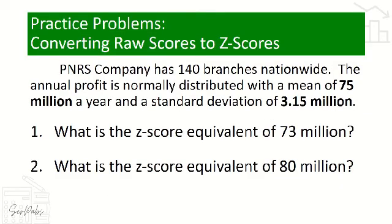For our practice problems, this will be your turn. PNRS company has 140 branches nationwide. The annual profit is normally distributed with a mean of 75 million a year and a standard deviation of 3.15 million. Problem 1: what is the Z score equivalent of 73 million? Problem 2: what is the Z score equivalent of 80 million? Comment your answers down in the comment box.